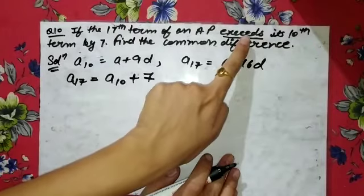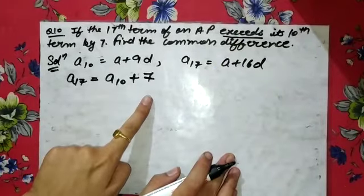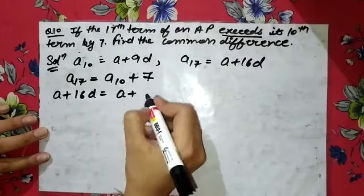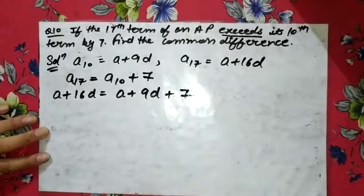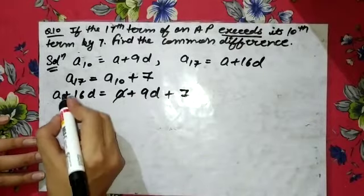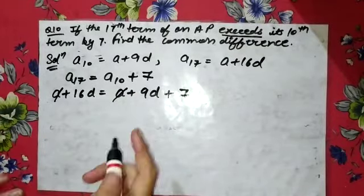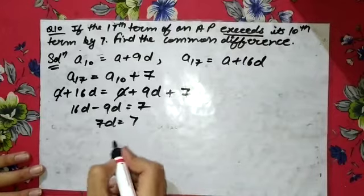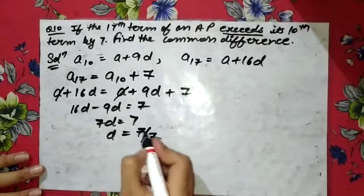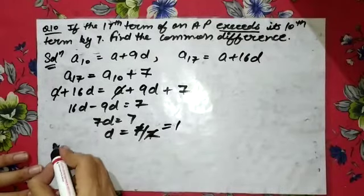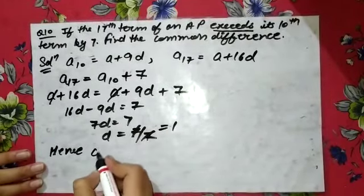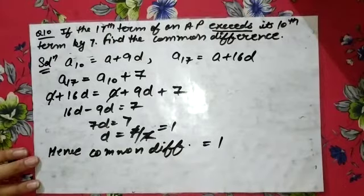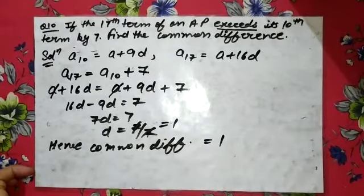So a17 = a10 + 7 gives us: a + 16d = a + 9d + 7. The a terms cancel, leaving 16d minus 9d = 7, so 7d = 7 and d = 1. Hence the common difference is 1.